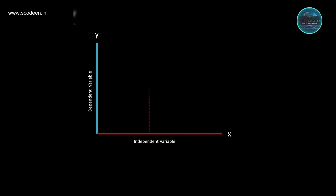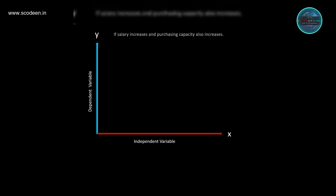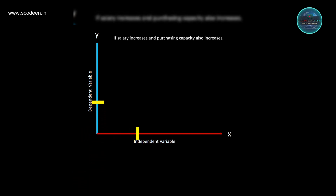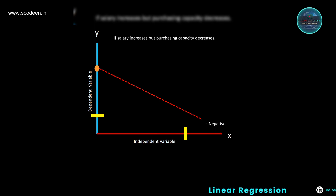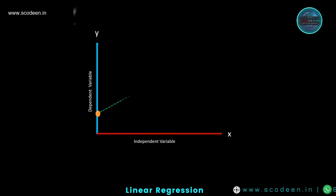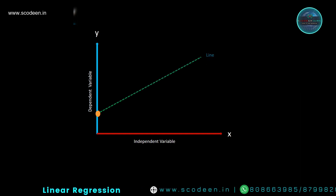If we create a relationship between the x and y variable, we can see a straight line. If the independent variable (salary) increases and the dependent variable (purchasing capacity) also increases, a positive slope is created. On the other hand, if the independent variable increases but the dependent variable decreases, it creates a negative relationship. In linear regression, this line is a straight line and it is the key element.